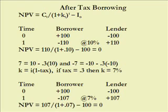Let's do this after tax. In a 30% tax bracket, that would be 7% — $7 interest to both the borrower and the lender. We discount this at 7%. $107 is the cash flow: principal plus interest, discounted at 7%, that's 100, minus the $100 initial outlay — the net present value is 0.